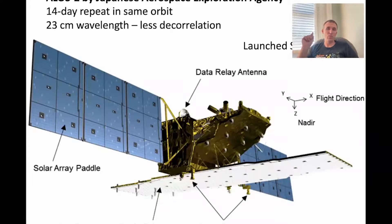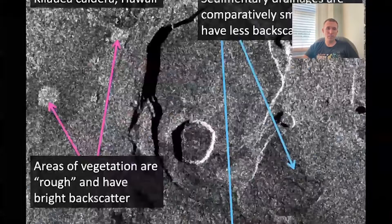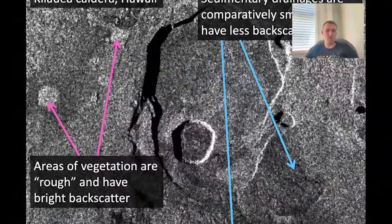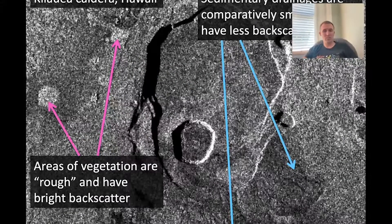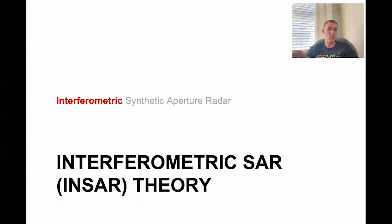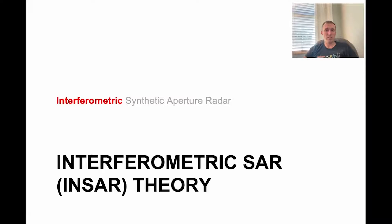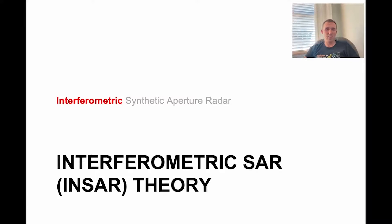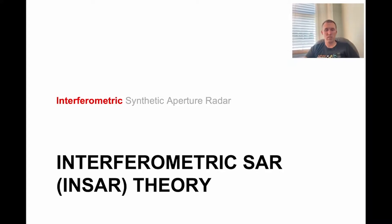So we've talked about backscattering and amplitude. In the next section on interferometric SAR, we'll talk about how you can use the phase. We separate out the amplitude from the phase, then take the phase from two different acquisitions, and that produces our InSAR. We'll talk about that next time.